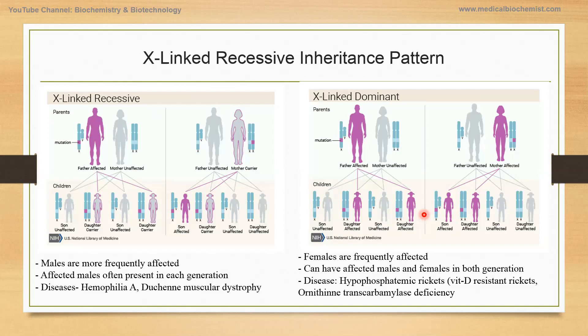Next, X-linked recessive and X-linked dominant inheritance patterns. As you know, in humans there are two X chromosomes in females and X and Y in males. When there is a mutation in the X chromosome, there are two different scenarios: what will happen when the father has a mutation in the X chromosome, and what will happen when the mother has a mutation in the X chromosome.